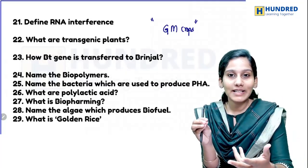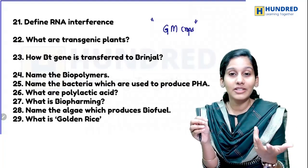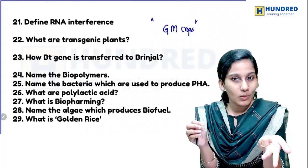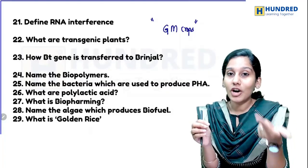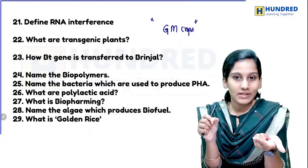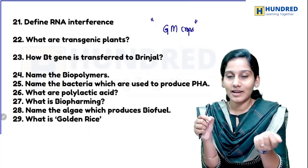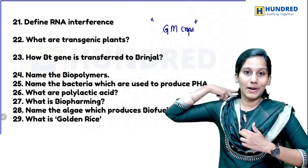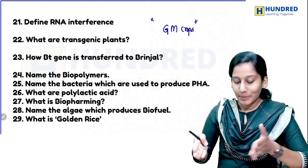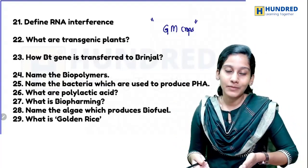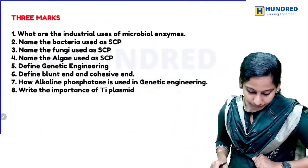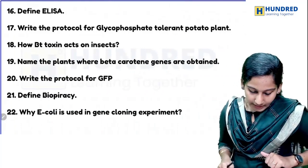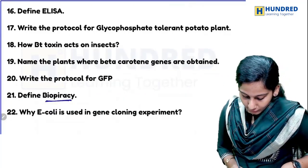Golden rice is developed for night blindness — an eye disorder — to prevent it using beta carotene. BT cotton: the cotton plant was being attacked by insects and technology was used to prevent this. Biopiracy is also important. A lot of questions can be asked from these topics.